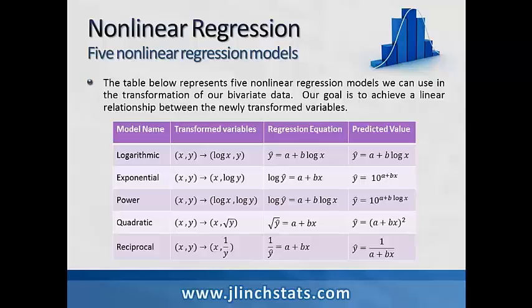The first one is a logarithmic transformation. We're going to take our original x, y values and transform them into log x versus log y values. When we do that, our linear regression equation will now be transformed into ŷ = a + b·log(x). Our predicted value ŷ is a plus b times log of x.